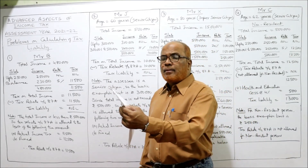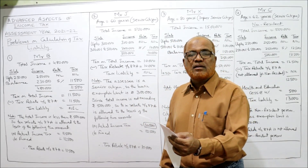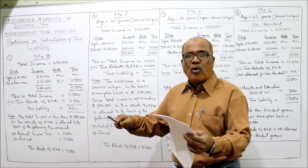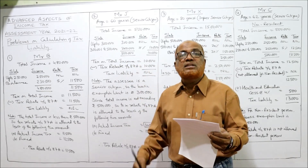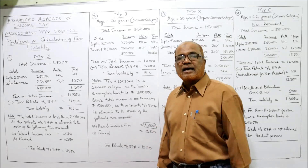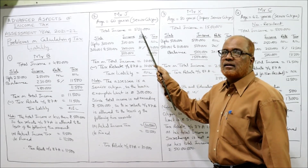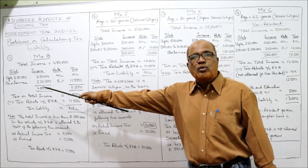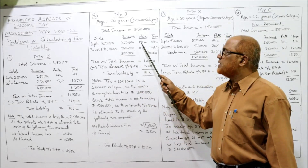Second problem: Mr. J is 60 years old. 60 years means senior citizen — 60 and above but below 80 are senior citizens. For a senior citizen, the basic exemption limit is ₹3,00,000. He is a resident of India and has earned a total income of ₹5,00,000. Calculate the tax liability. Mr. J, age 60 years, senior citizen, total income ₹5,00,000. The basic exemption limit for a senior citizen is ₹3,00,000, compared to ₹2,50,000 for a non-senior citizen.